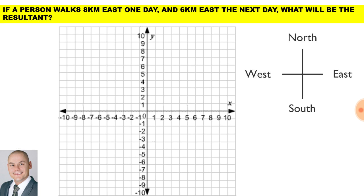Here is our first practical example. We will use our compass headings to assist us. If a person walks 8km east on one day and 6km east on the next day, what will be the resultant? 8km east plus 6km east would give us the resultant of 14km east.